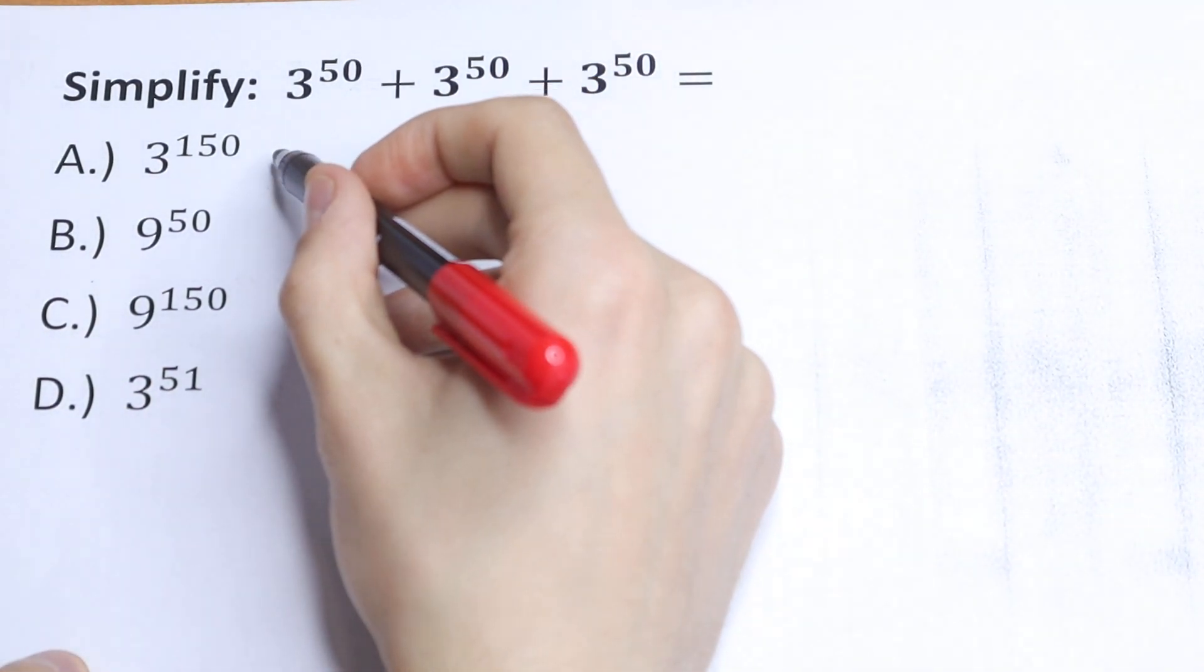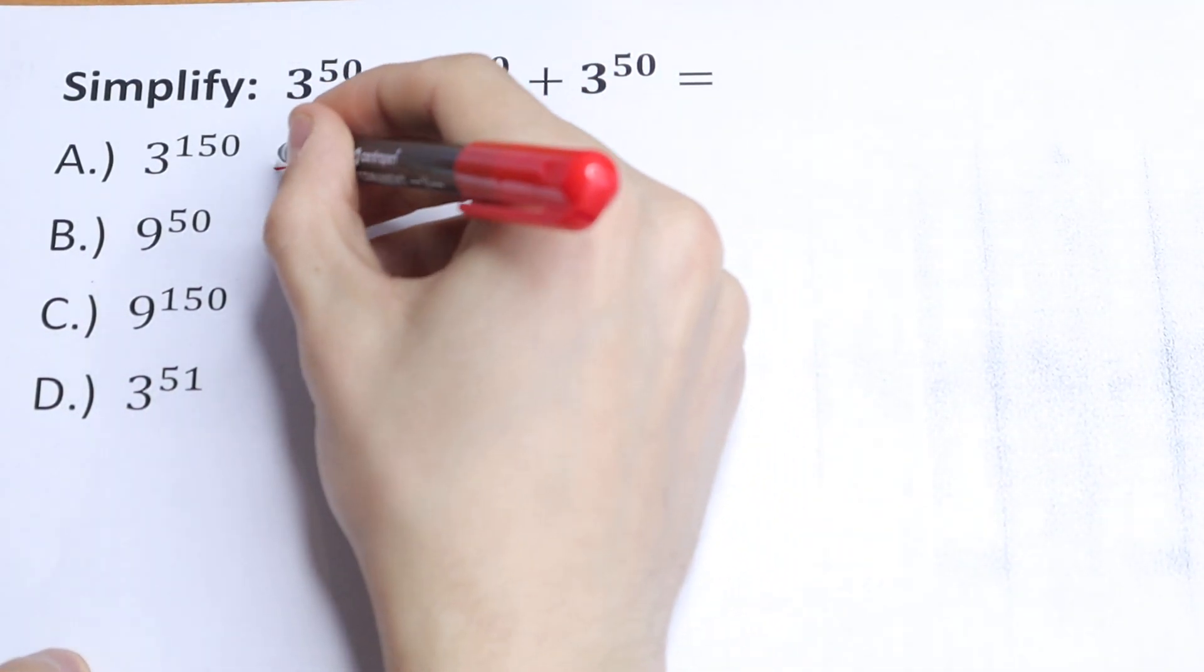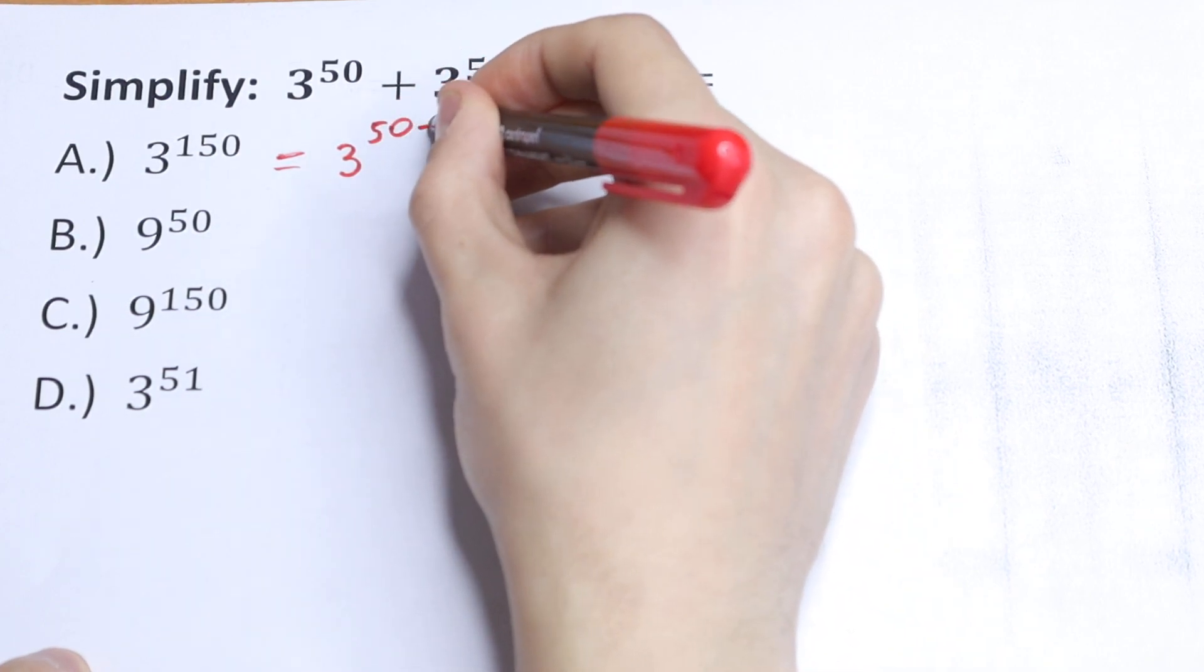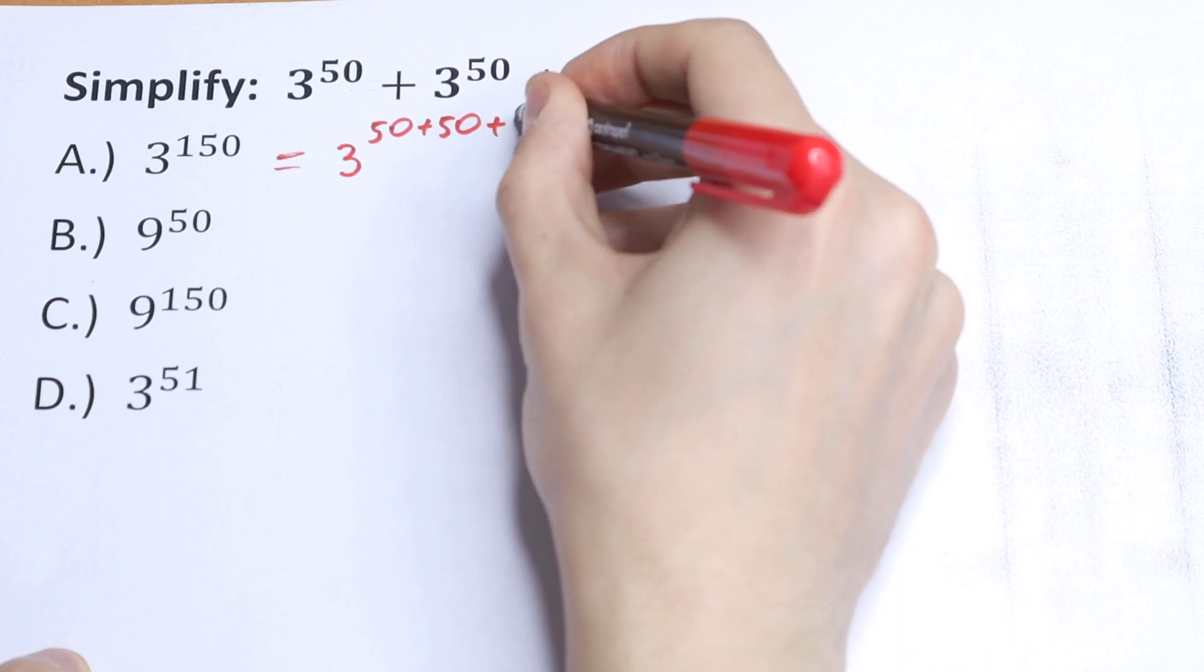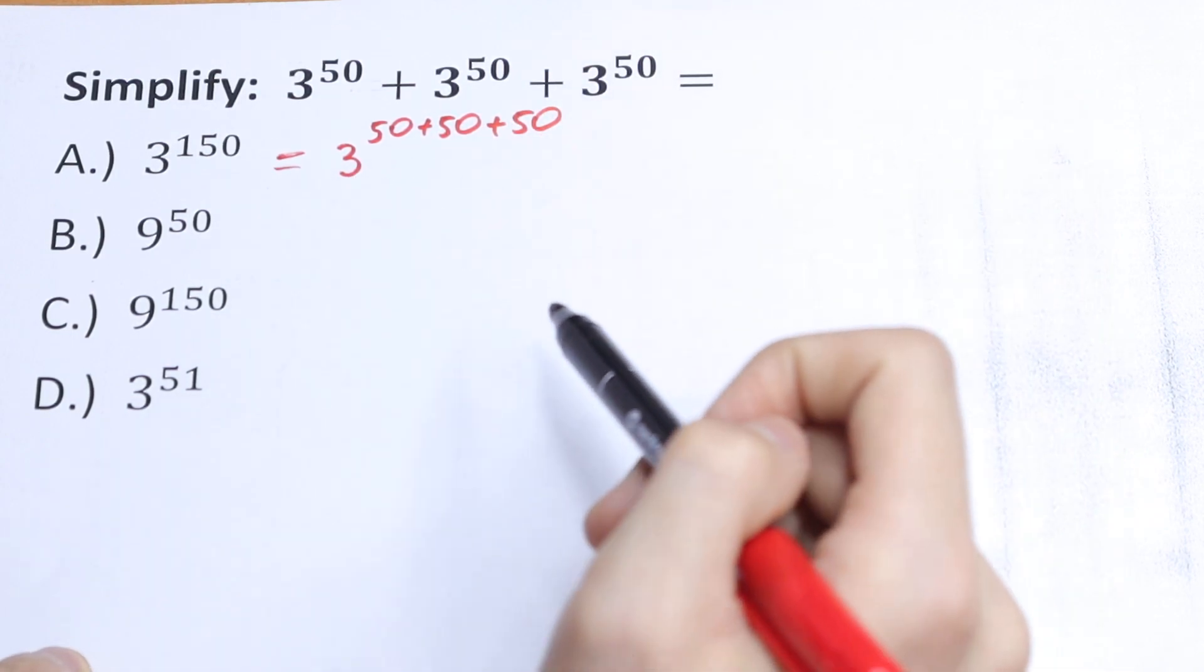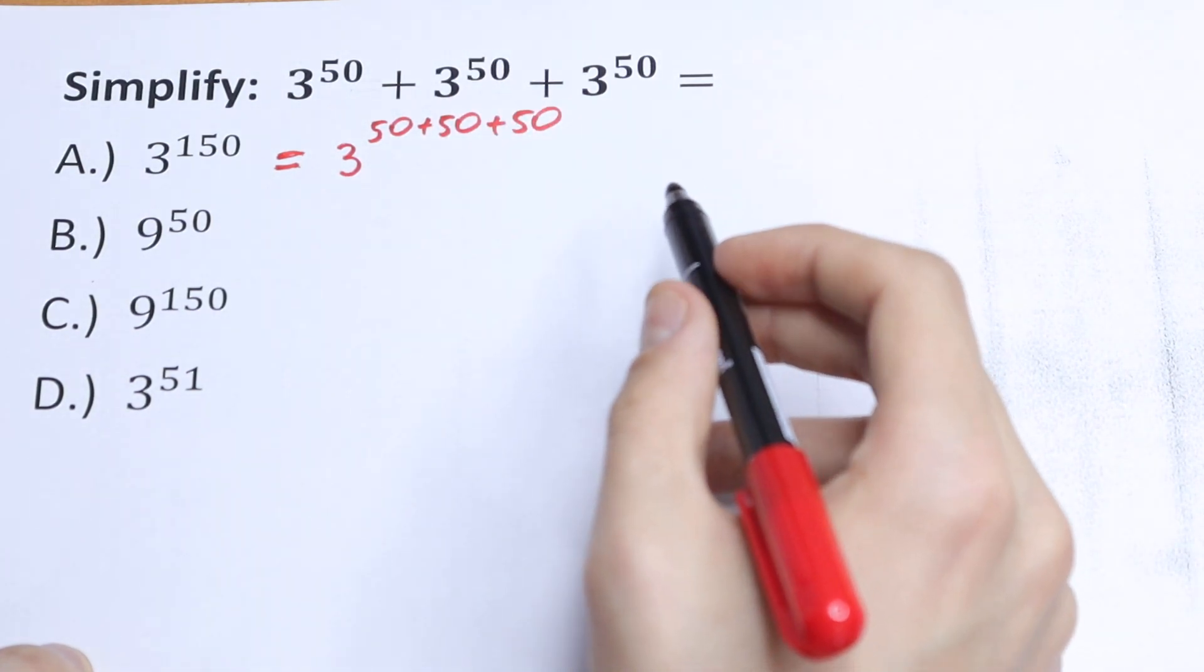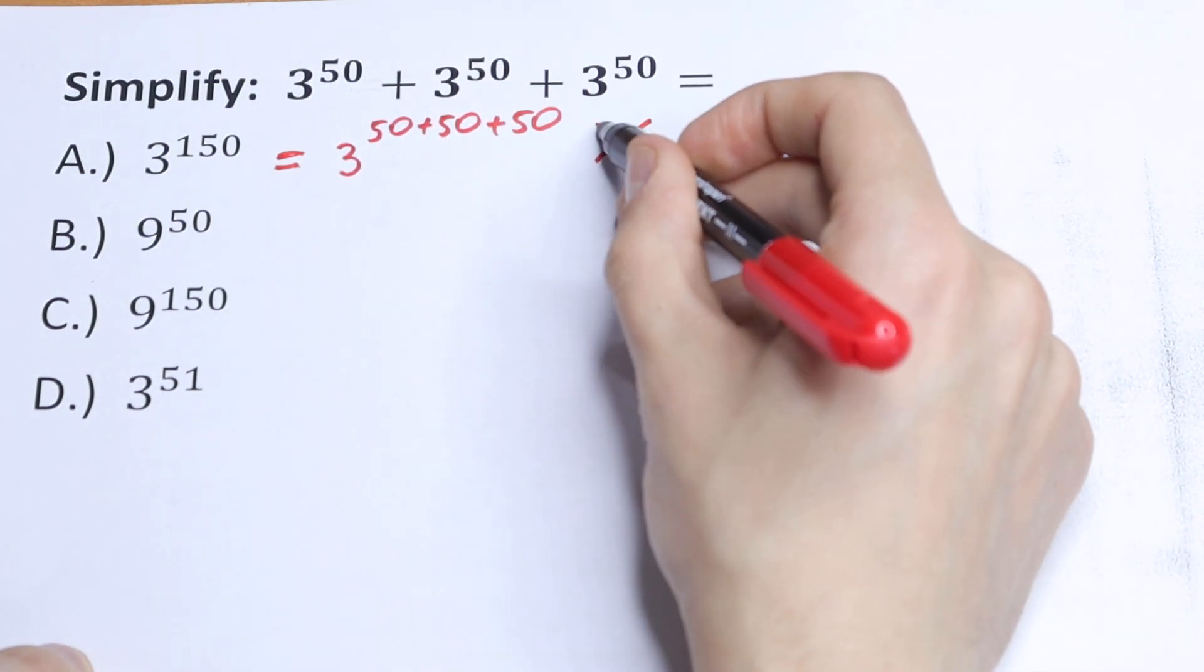3 to the power 150 can be written as 3 to the power 50 plus 50 plus 50. We can write this in that way, and of course this is not the same as in the beginning, so answer A is not correct.